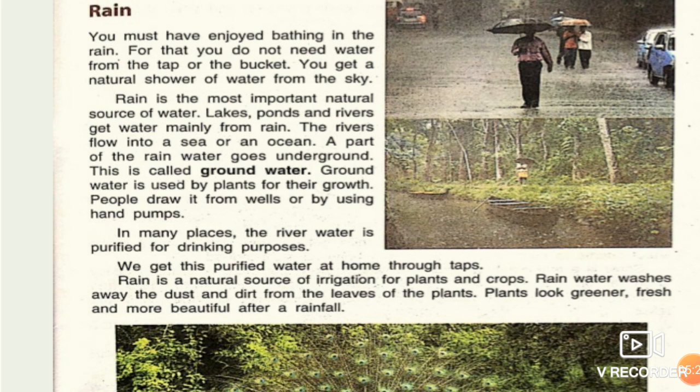Rain is a natural source of irrigation for plants and crops. Irrigation means to water the crops and plants in the field. Rainwater washes away the dust and dirt from the leaves of plants. Plants look greener, fresh, and more beautiful after a rain shower because rainwater washes away all the dust and dirt from the leaves.